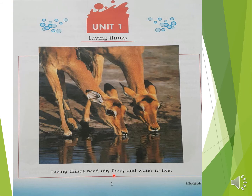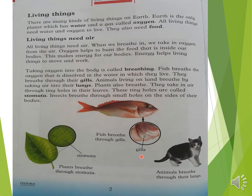Living things need food and water to live. Earth is the only planet which has water. The Earth is rich with water and a gas called oxygen. All living things need water and oxygen to live.